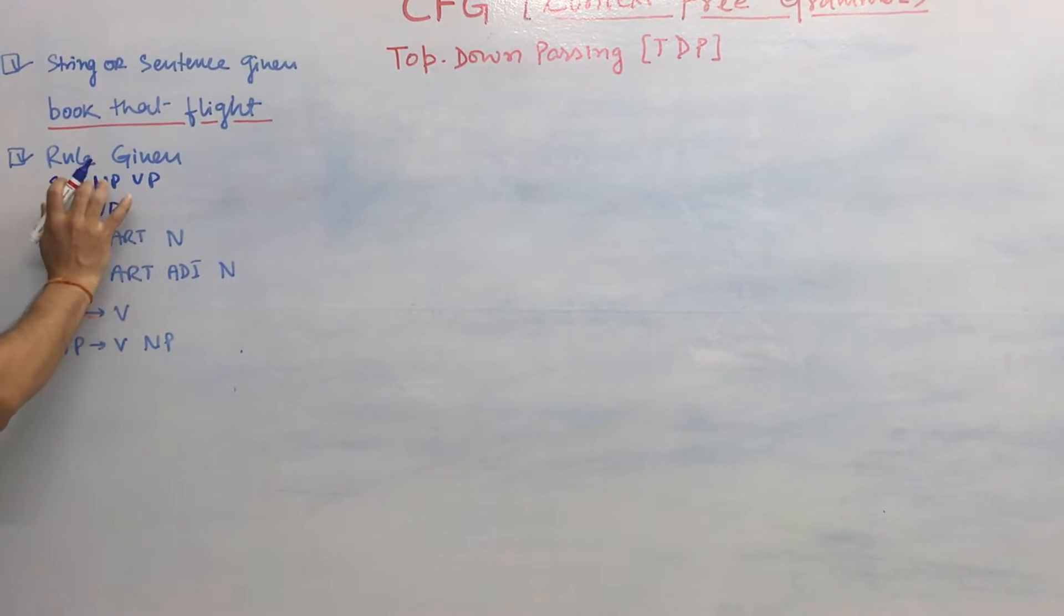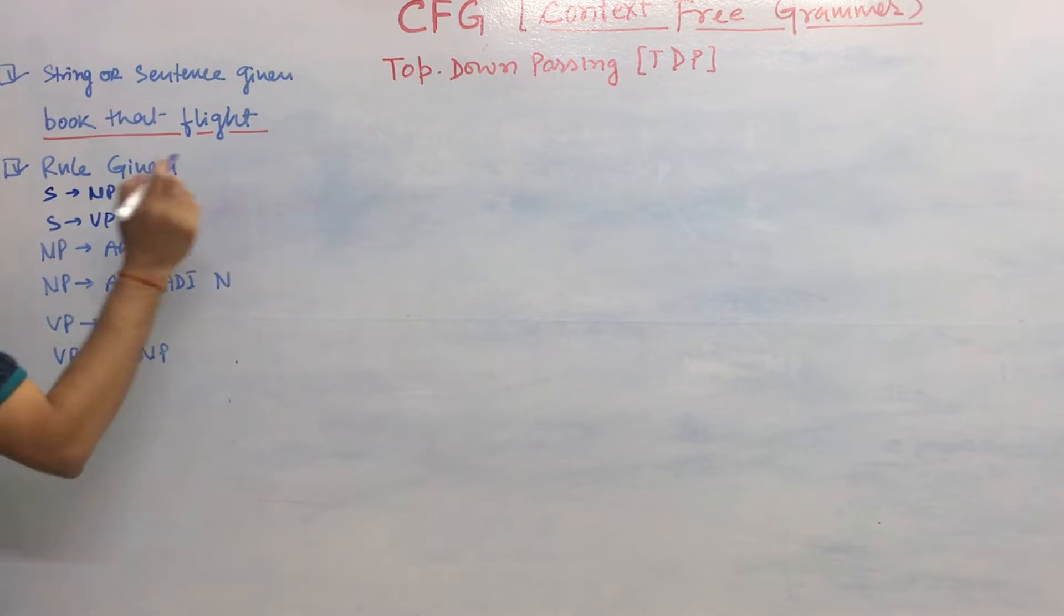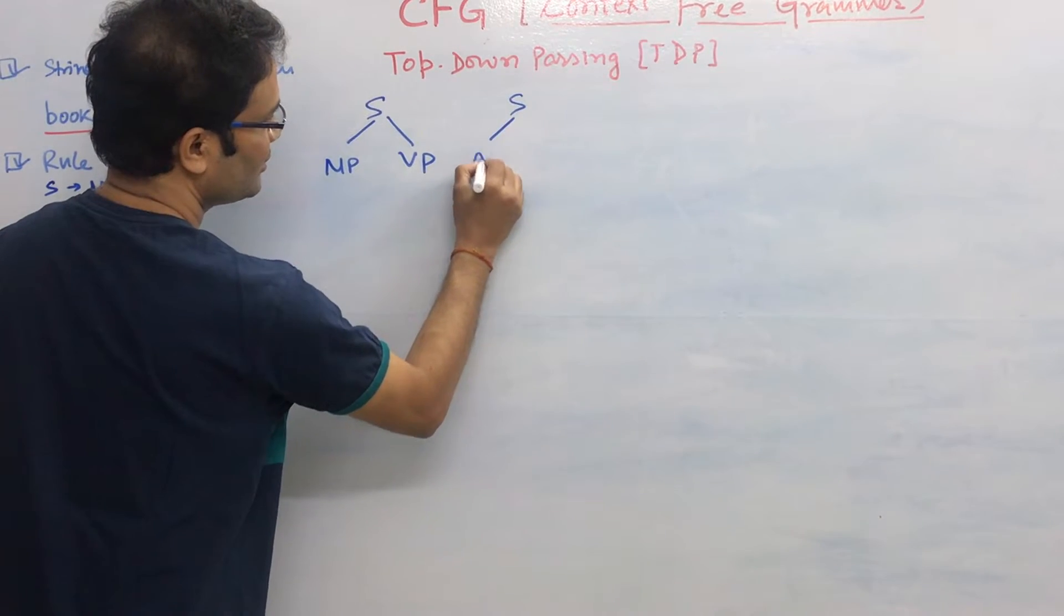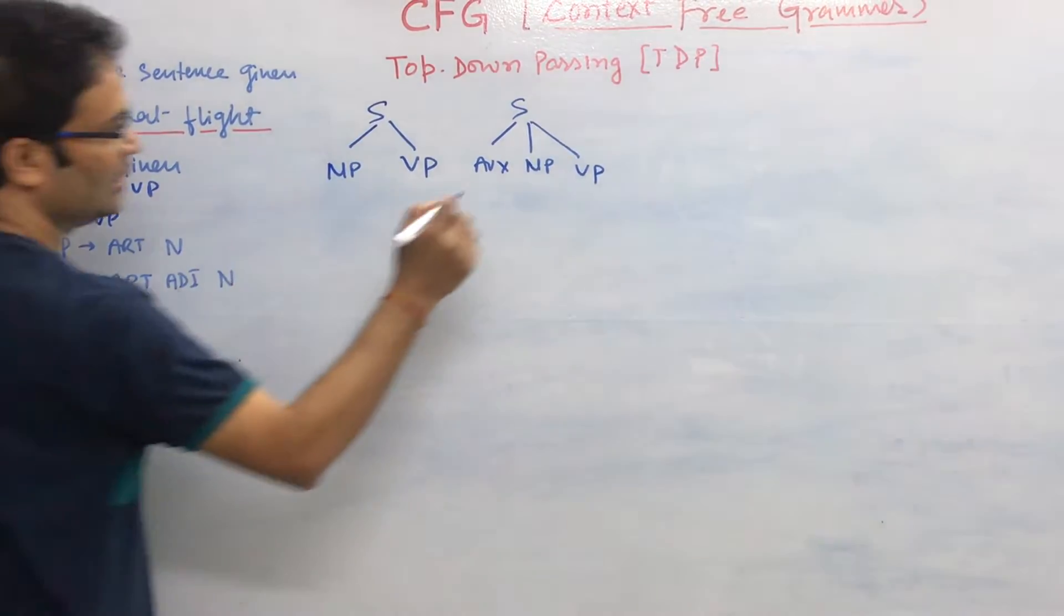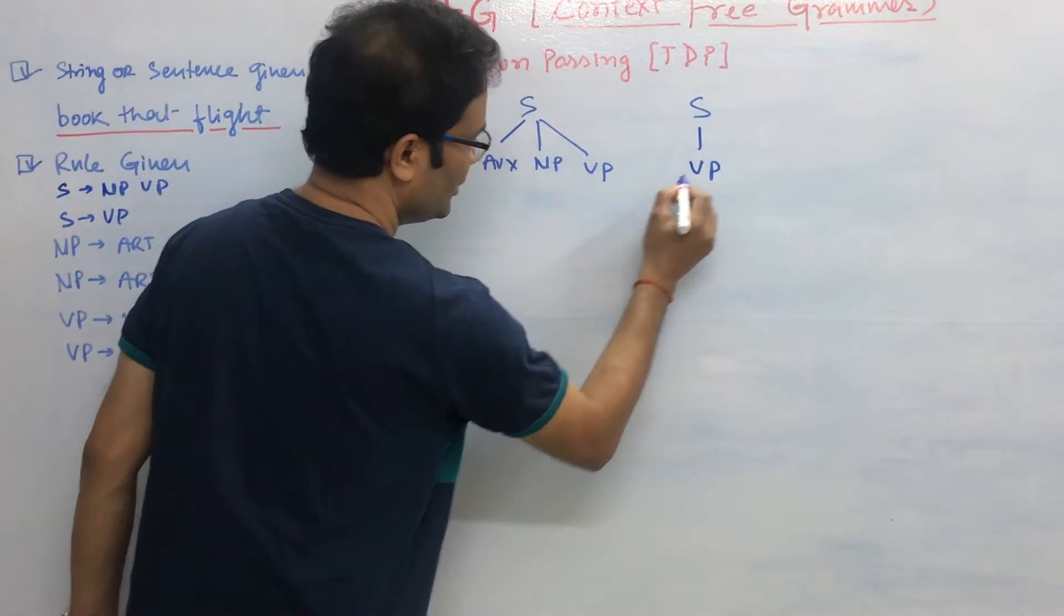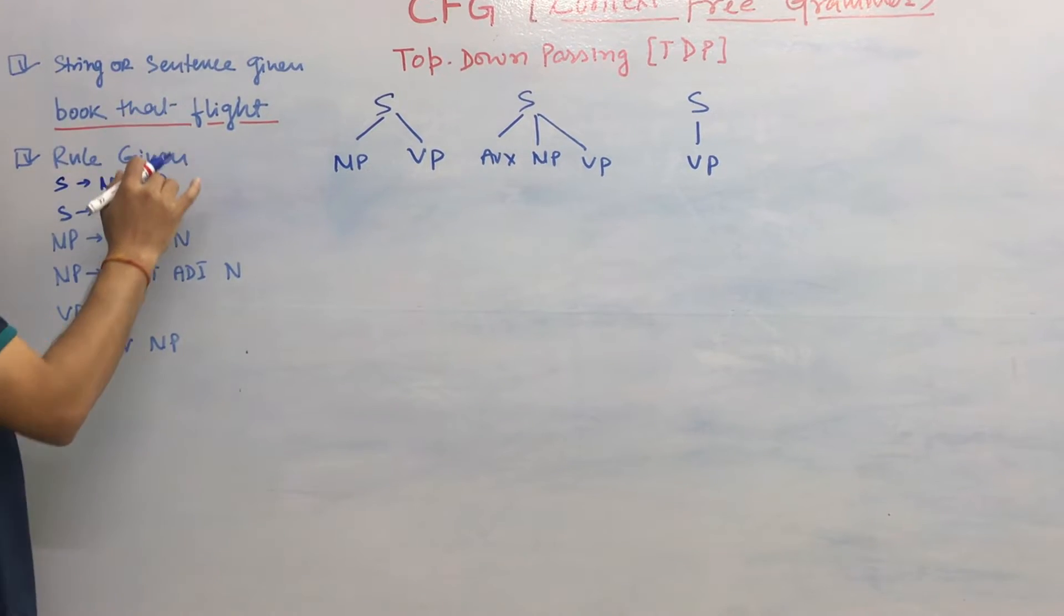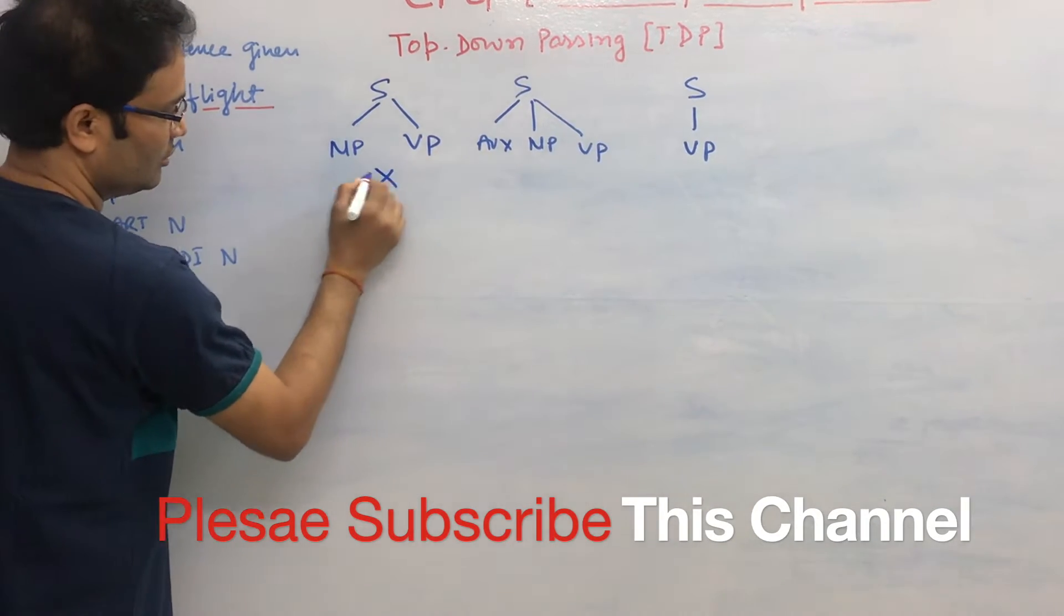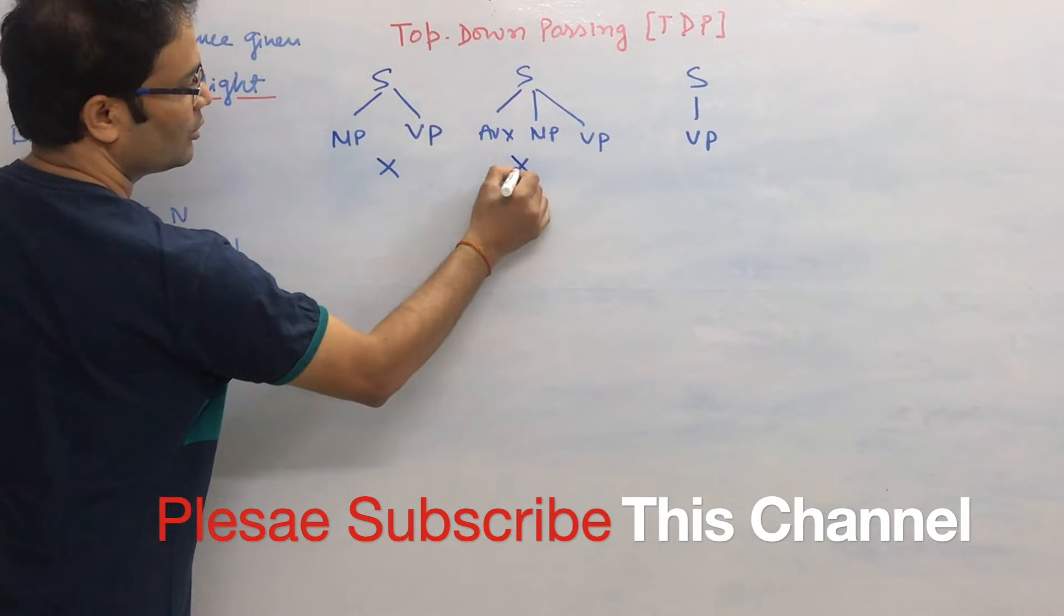First, we take the top-down parsing. Sentence has been given 'book that flight' and these are the rules. What I will do, I will take the rules and check whether that rule is applicable to the given sentence or not. Take the first rule: S goes to noun phrase and the verb phrase. Another set of rules is that auxiliary, noun phrase and verb phrase, that is not there but this is a common one. Third, take the S and the verb phrase. Now check which is going to be suitable according to the given sentence. Here we know, we are taking the top-down approach. We know what is this 'book', book is the verb here, this is not the noun, so this is ruled out, it will not work. Second case, before noun, you could have any auxiliary, so even I do not have the noun, so we are not going to take it.